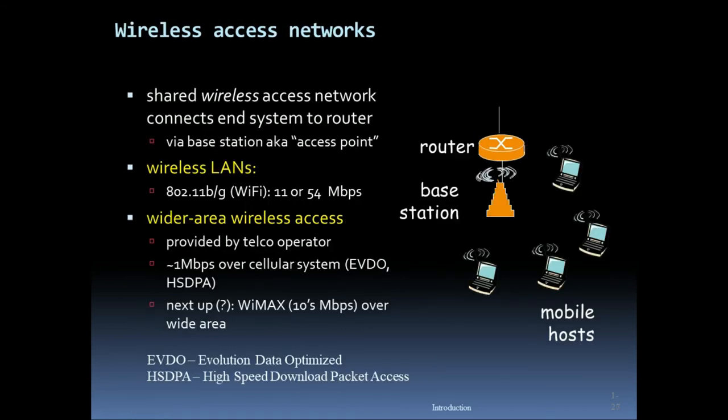Wireless access networks: a shared wireless access network connects end systems to a router via a base station. Wireless LANs — Wi-Fi — provide bandwidth of 11 to 54 Mbps.